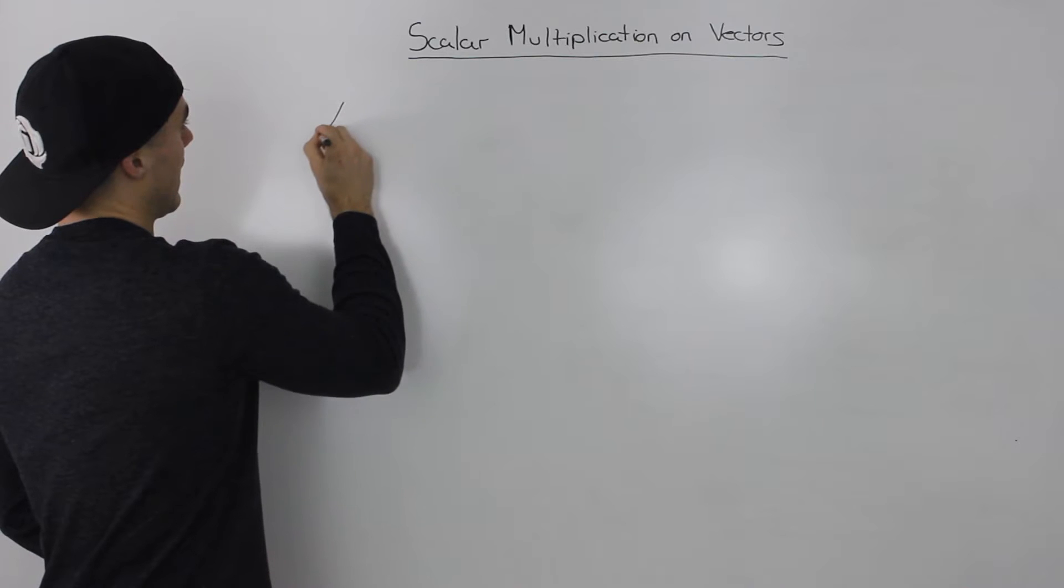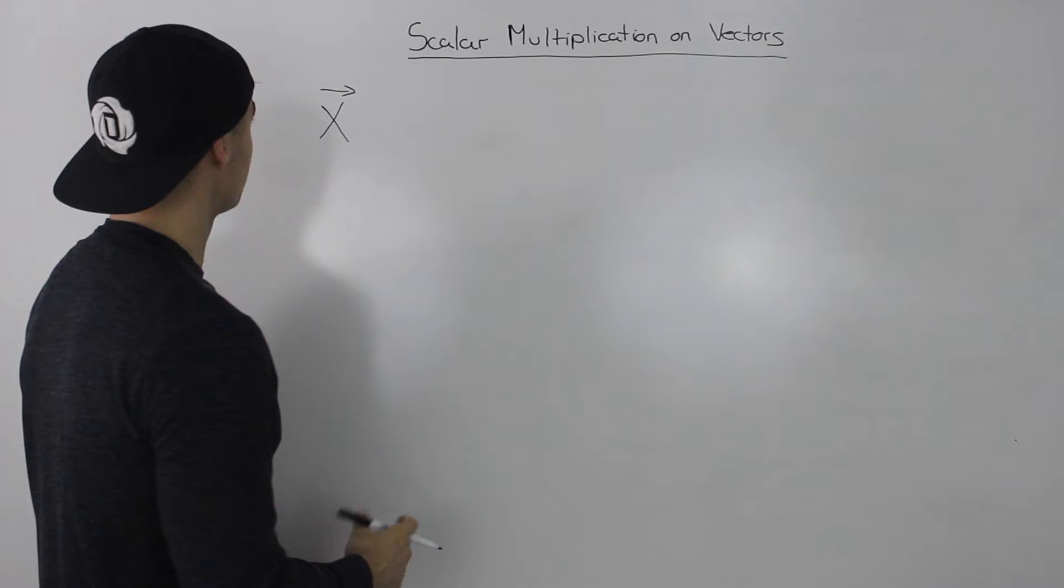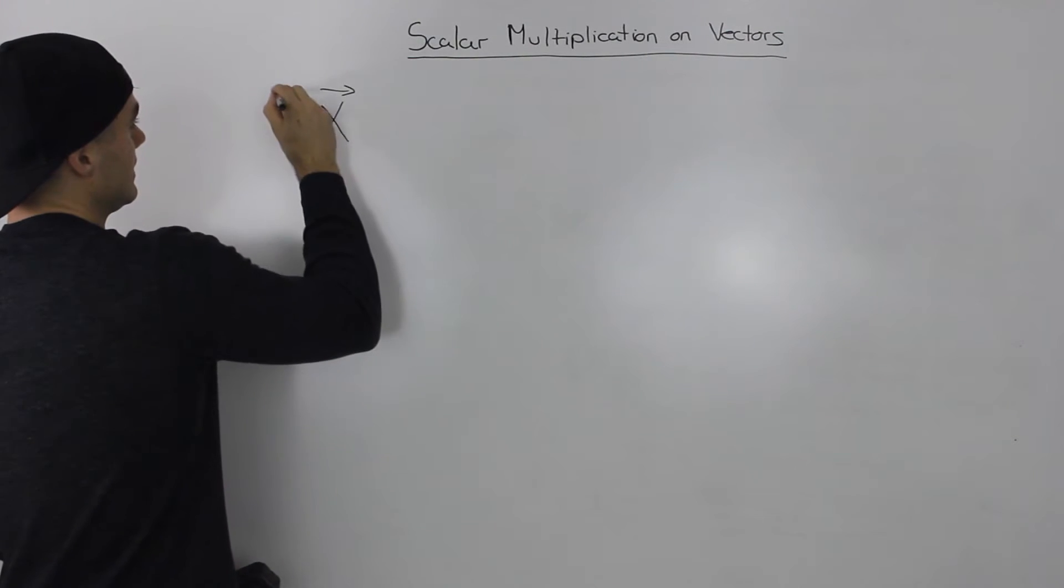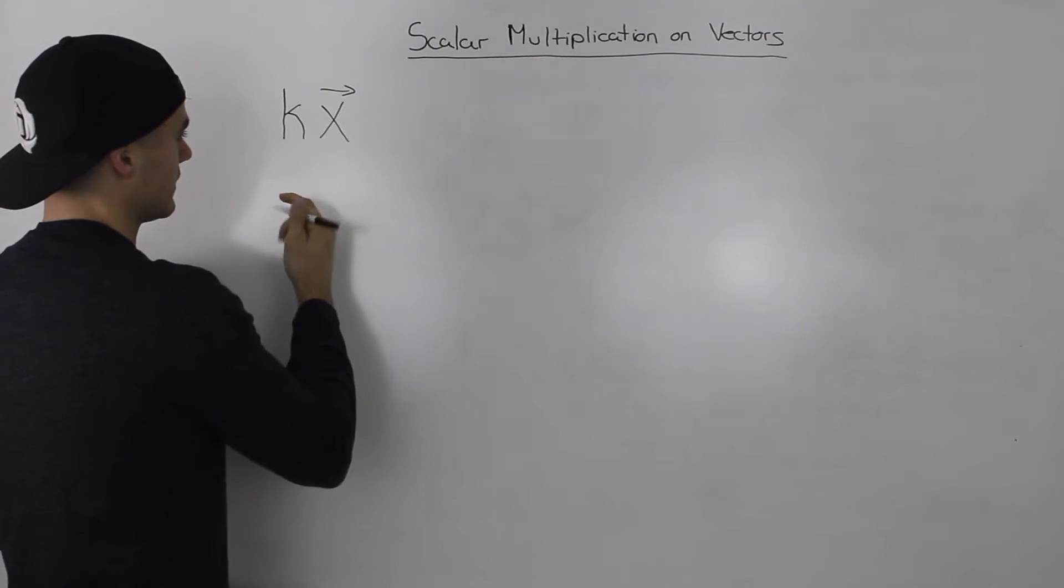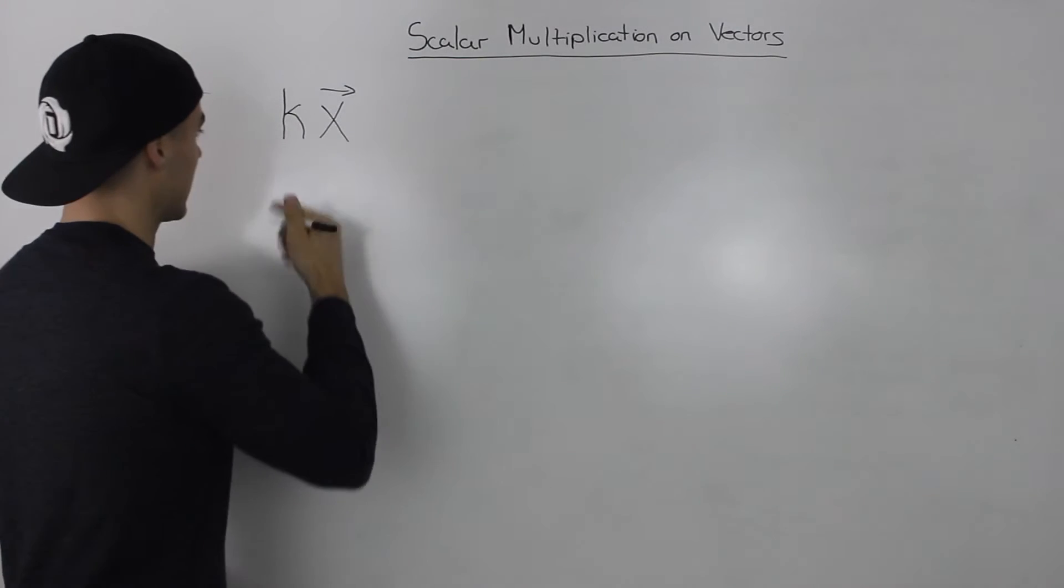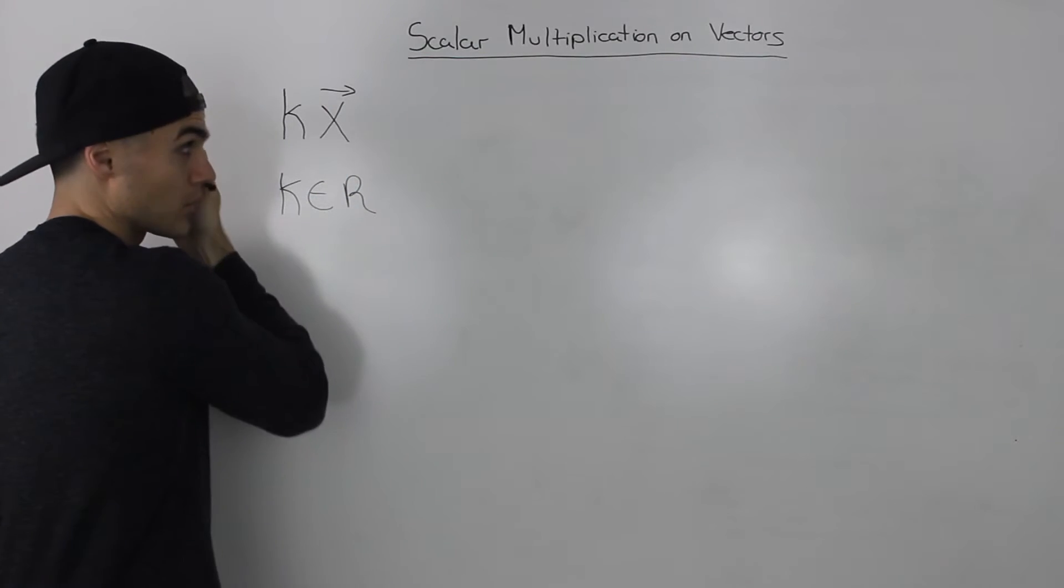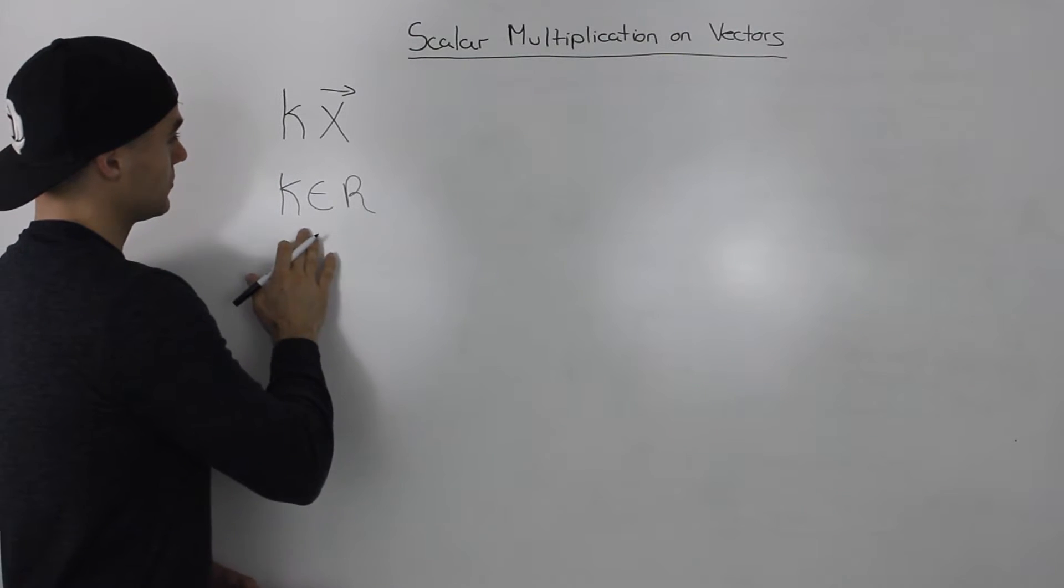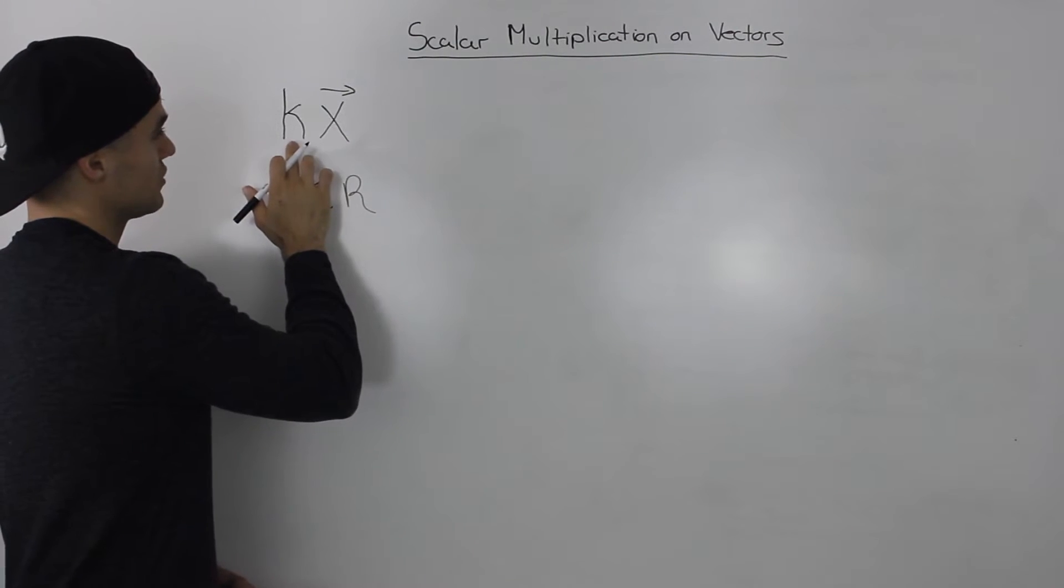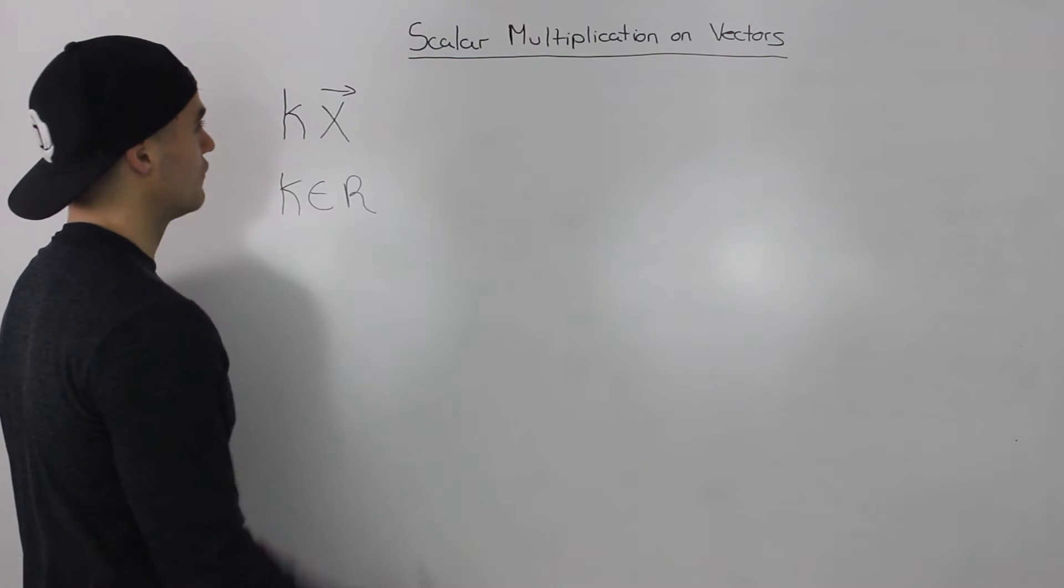Well, let's say that we have a vector here, some kind of vector x. And let's say that we multiply it by some kind of number, some kind of scalar k. Now, this k can be positive, negative. Basically, k is an element of any real number. And the real question is, when we multiply this vector by a certain real number, what effects does that have on the original vector?